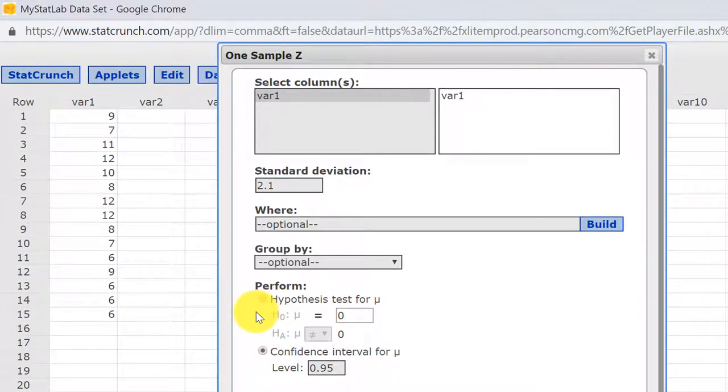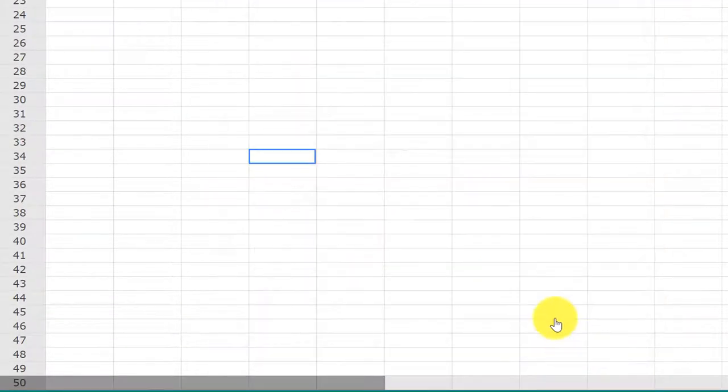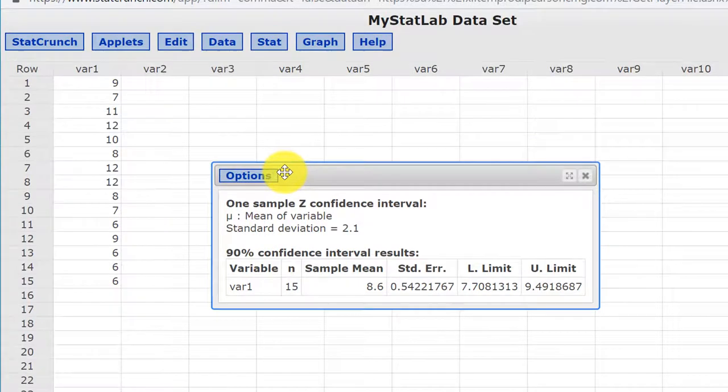Note, we could run a hypothesis test with the same setup, but here we want the confidence interval, and we want 0.90 for 90%, and I'm just going to click Compute, and we get our answer here.